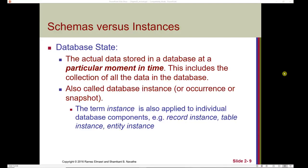The difference between a schema and an instance lies in that the instance provides actual data for the schema representation. This can be captured in what's referred to as a database state. A database state includes the actual data stored in a database at a particular moment in time — like taking a snapshot of an inventory system. This includes the collection of all the data in the database, also referred to as a database instance, occurrence, or snapshot. The term instance is also applied to individual database components, such as a record instance, a table instance, or an entity instance.